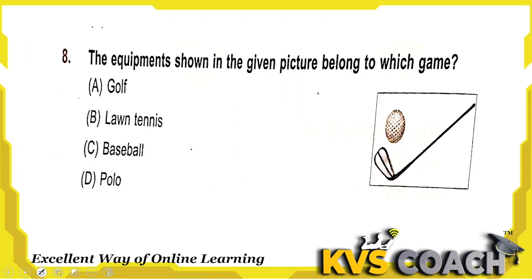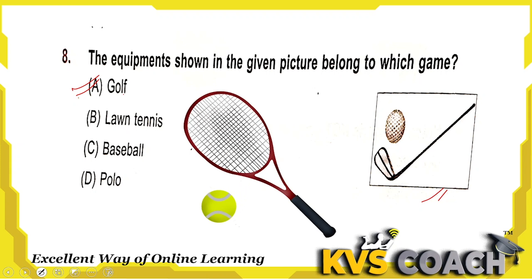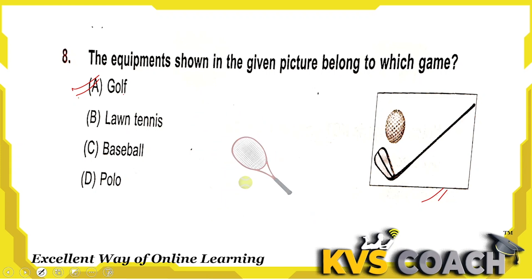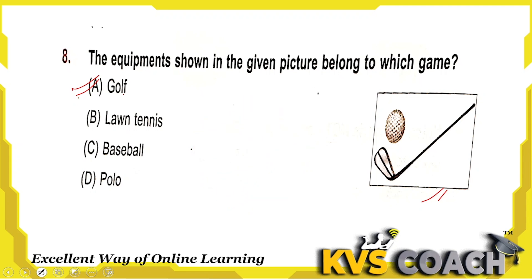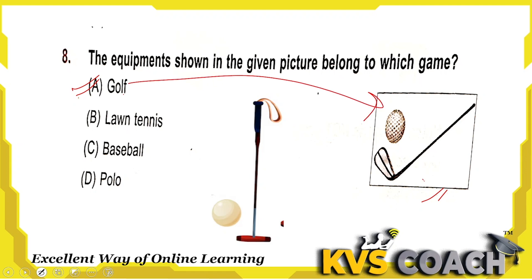Next: the equipment shown in the given picture belongs to which game? This equipment belongs to golf. Option C is the right answer. For lawn tennis we use this type of racket and ball, for baseball we use this type of ball, and for polo we use these types of equipment. This equipment belongs to golf only. Option C is the right answer.